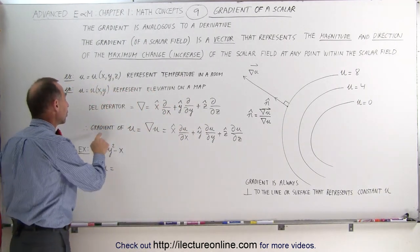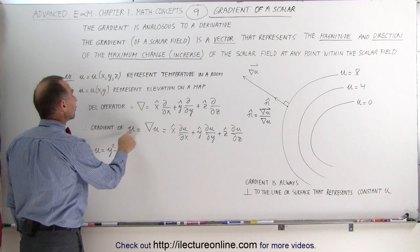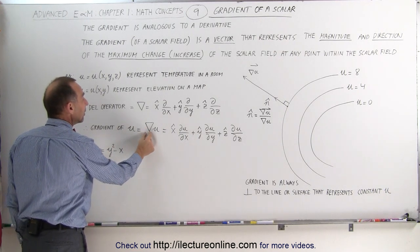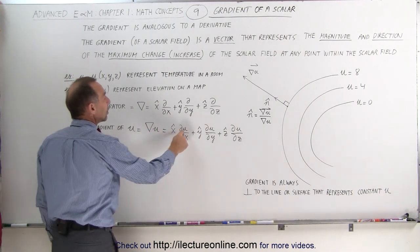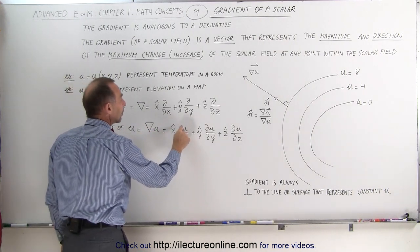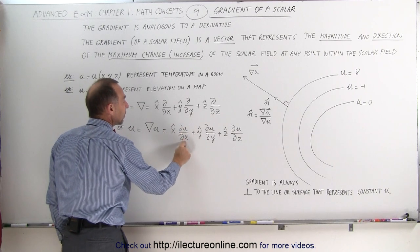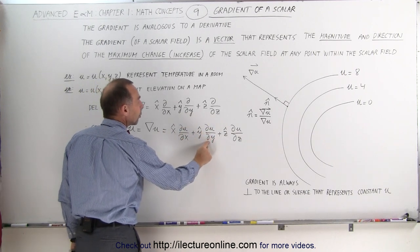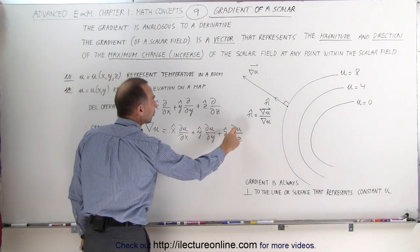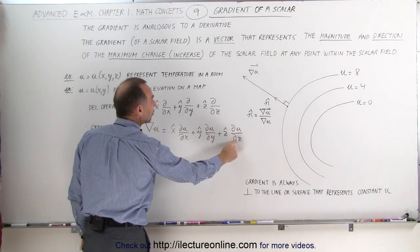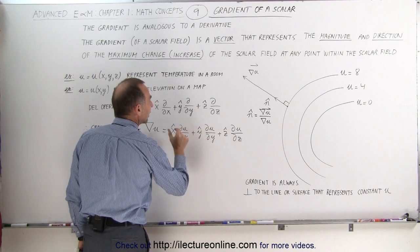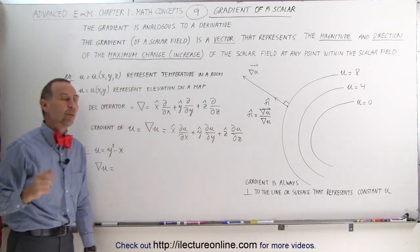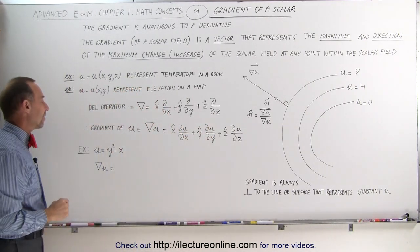So here we're going to take the gradient of u. We take the del operator and multiply by u. We take the partial of u with respect to X, the partial of u with respect to Y, and the partial of u with respect to Z, and multiply each by the corresponding X, Y, and Z unit vectors.